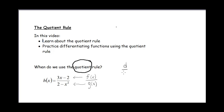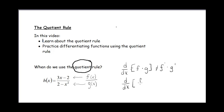If you remember from the product rule, if we were taking the derivative of two functions that were multiplied, this did not equal f prime times g prime. So hopefully you think: if that wasn't the case, then it's probably definitely not the case that you can just take the derivative of the top divided by the derivative of the bottom. So this is not true — you can't just take the derivative of the numerator divided by the derivative of the denominator.